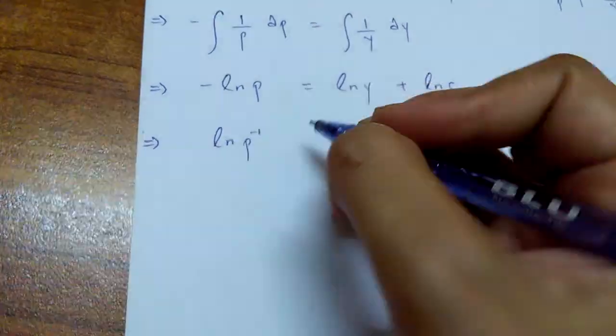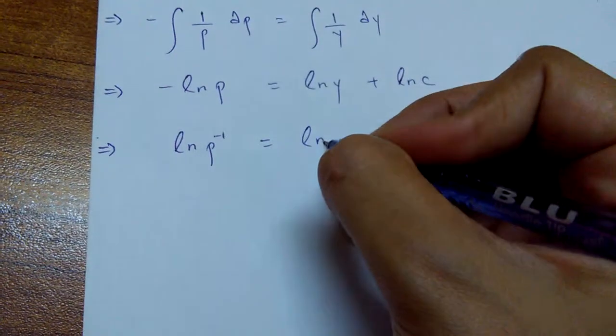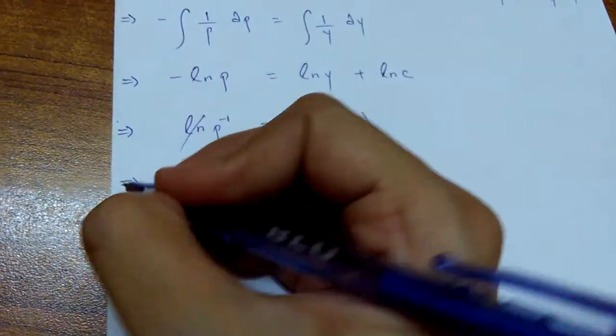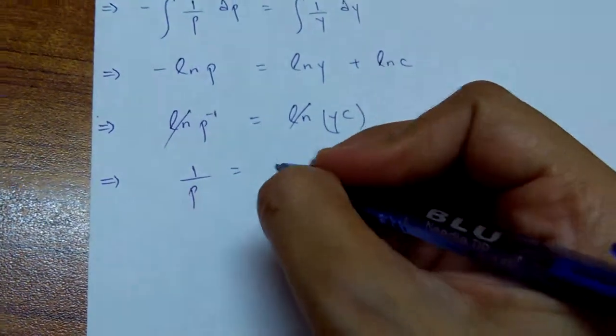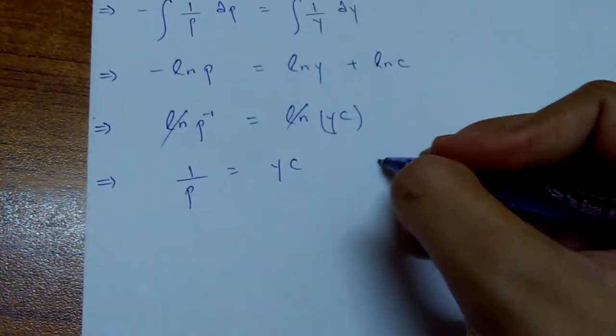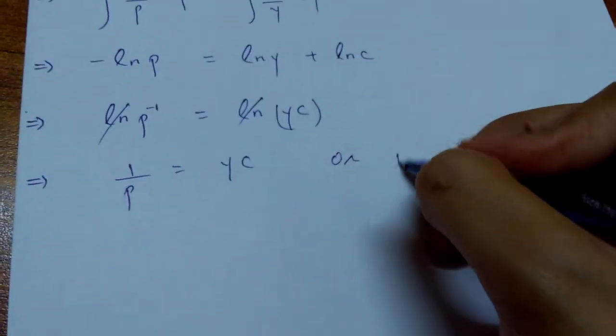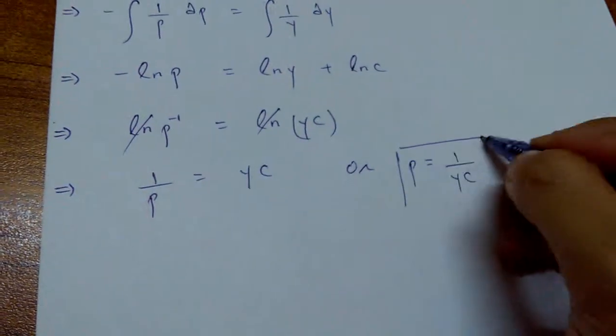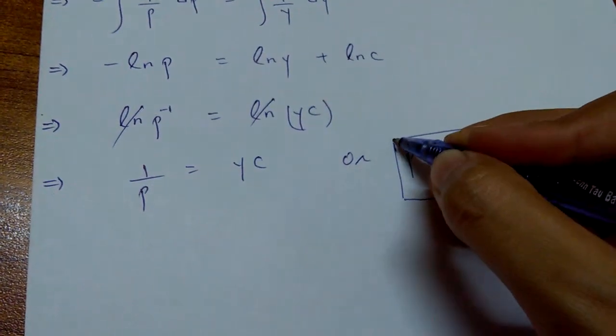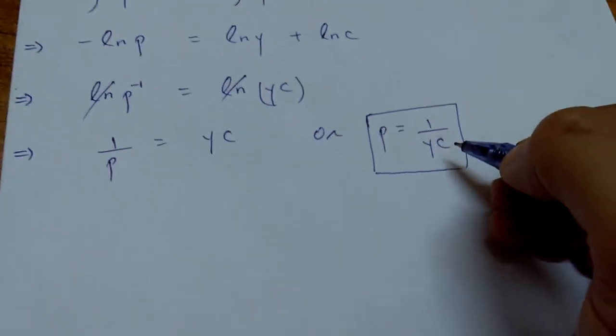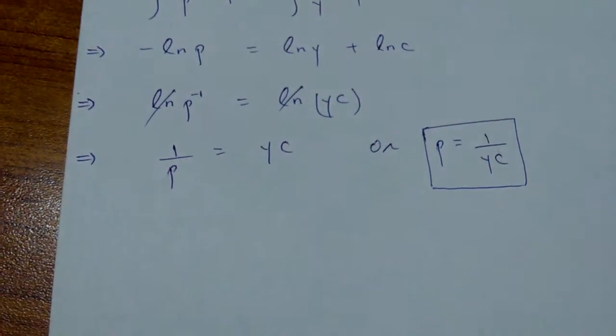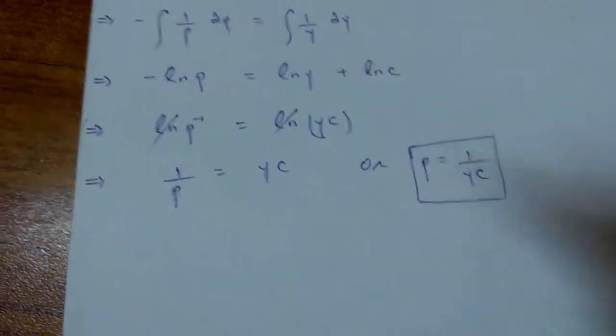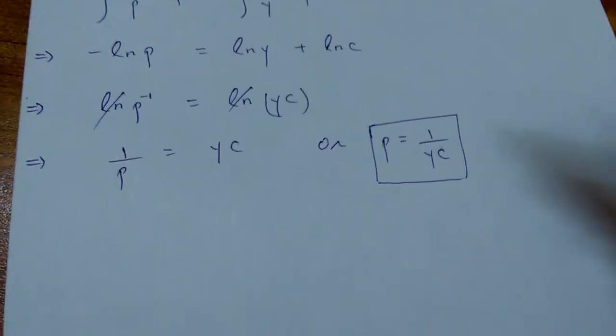So, it's going to provide me negative ln p equals ln y plus some constant. We can write constant as ln of C. We just use here the property of the log. And then ln gets cancelled. So, 1 upon p equals y c or you can write that p equals 1 over y c. C is a constant over here. So, whatever the value you are going to substitute at the place of the constant, every time you're going to have a new equation or new solution, and that new solution is going to satisfy your first equation, the differential equation.